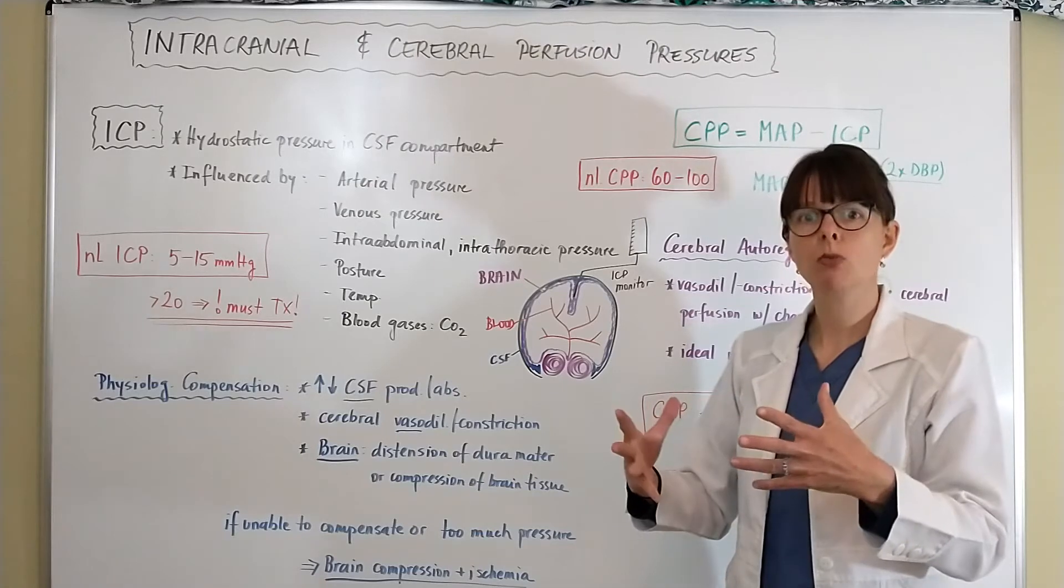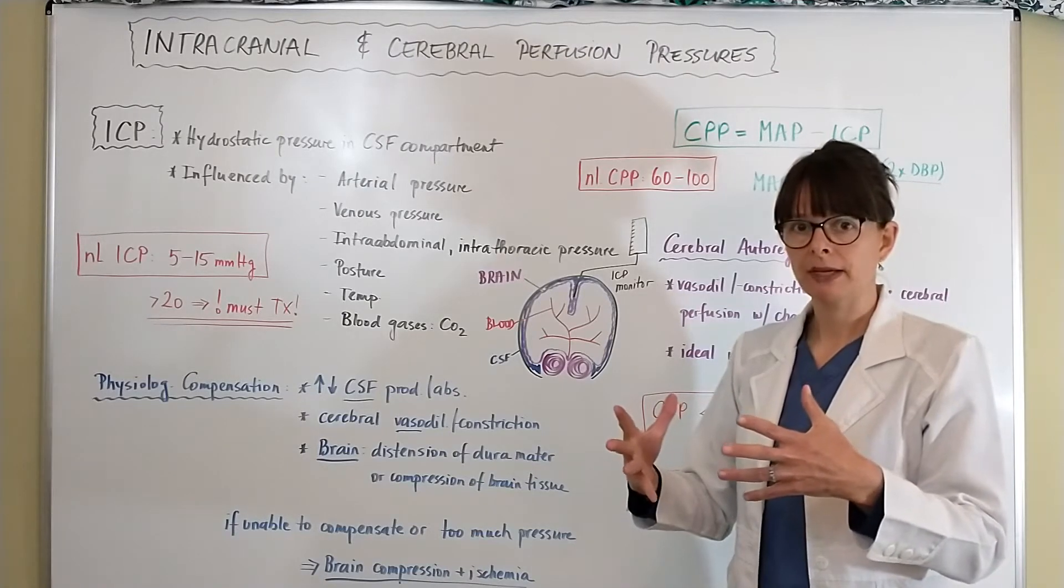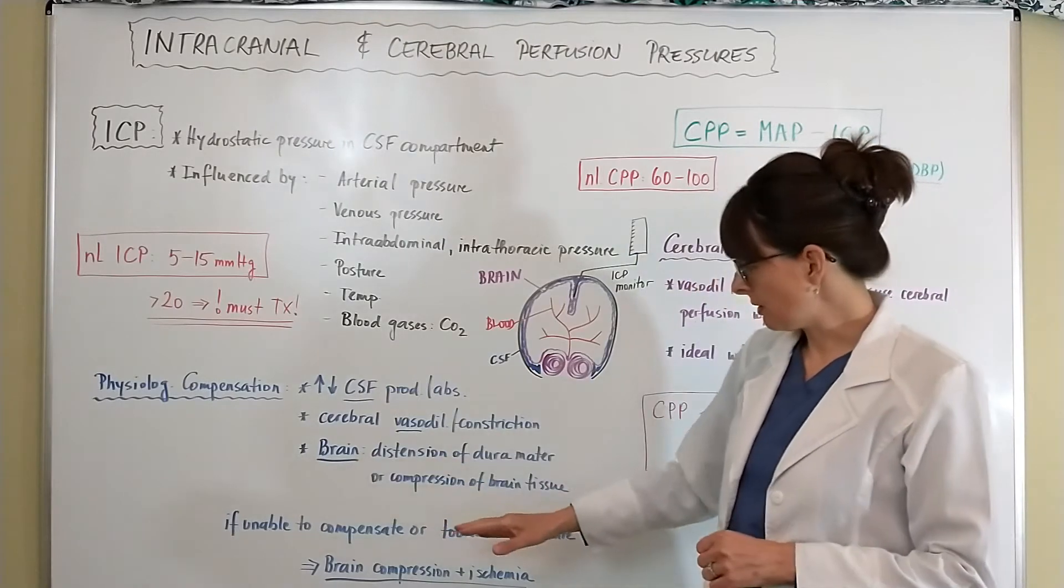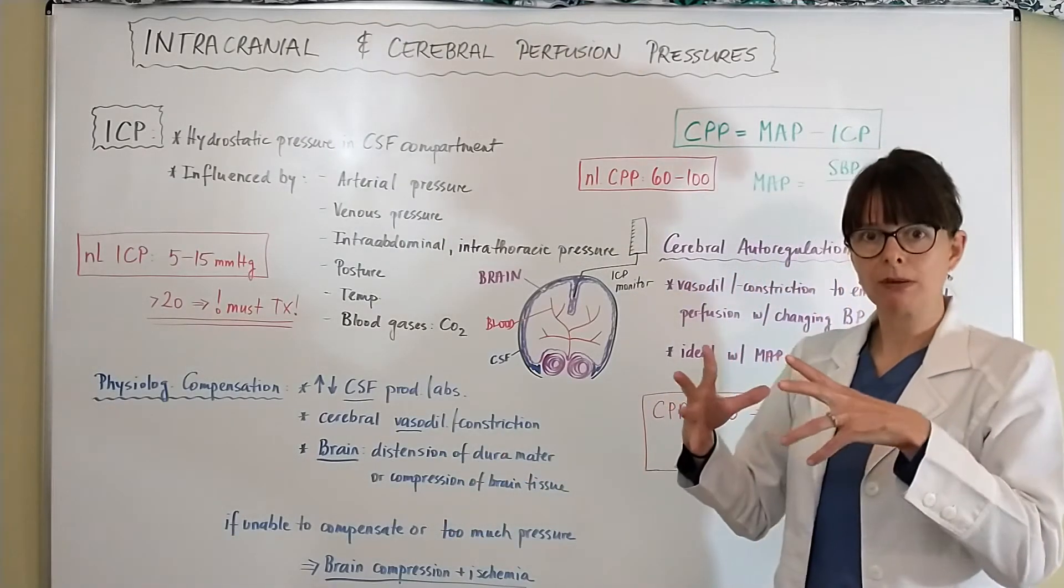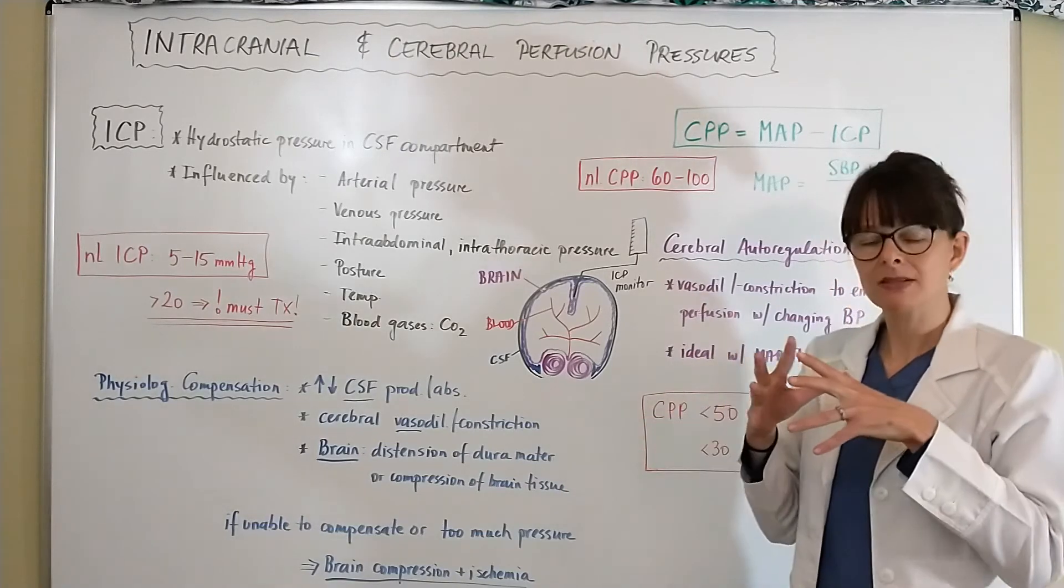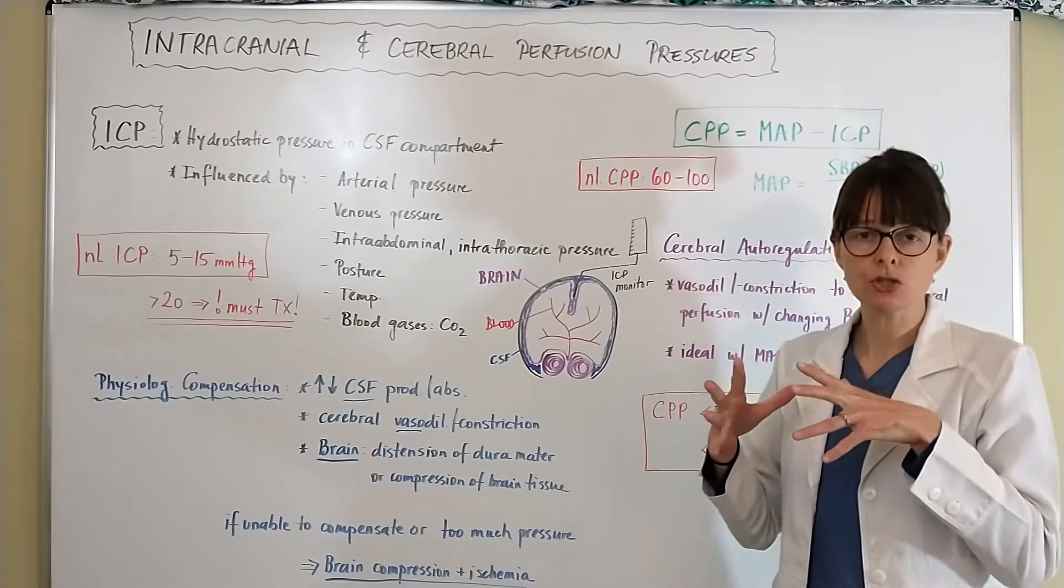Actually the brain itself can descend the dura mater, which is a protective lining of the brain, or it can slightly compress the brain tissue if there is a need to do that when there would be increased intracranial pressure.